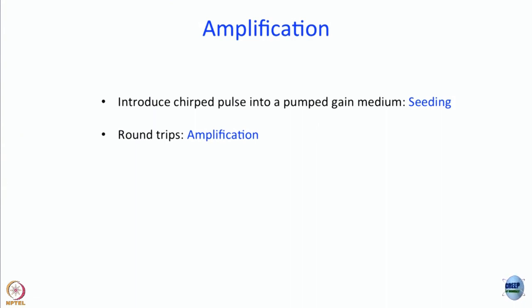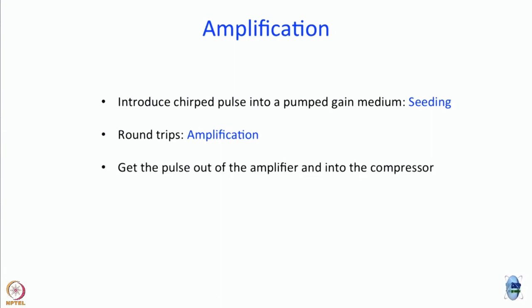What is the number of round trips? Is it better to have 5? Is it better to have 500? Is it better if you keep increasing — is maximum the best? Actually not. I am going to demonstrate that maximum is not the best. When you have reached amplification to a sufficient level, you switch the pulse out of the amplifier and into the compressor.